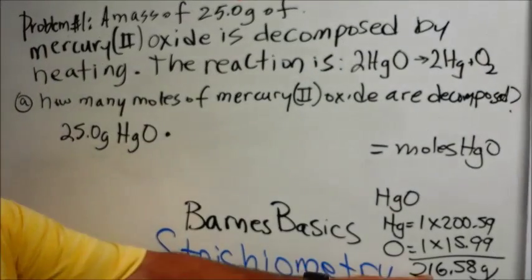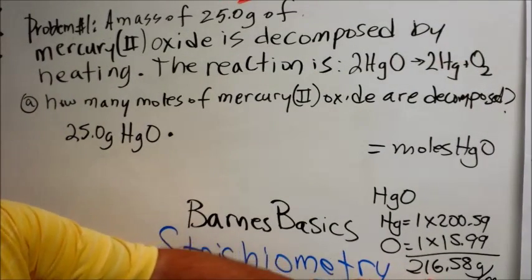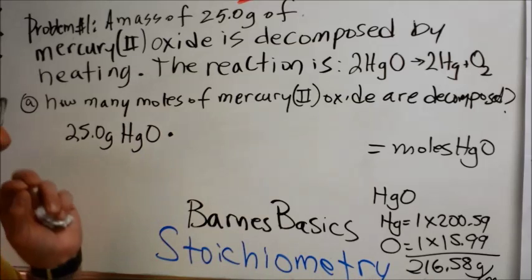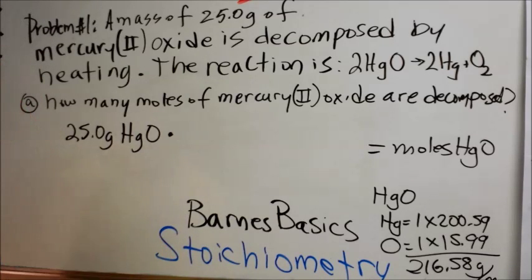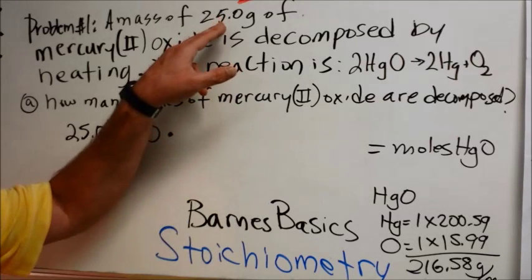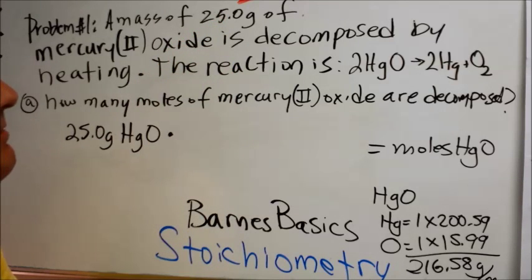Now, I do not start dealing with significant figures until I get to the end answer. That's how I do it, so you're going to have to see how your professor or teacher wants you to do this. In the original number 25.0, the 2 and the 5 are significant because they are non-zero digits.